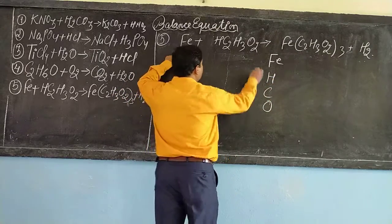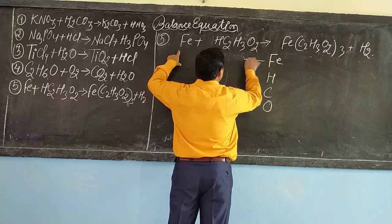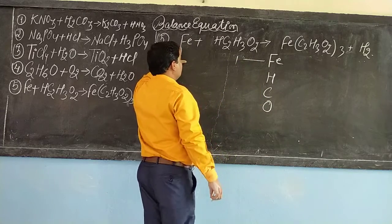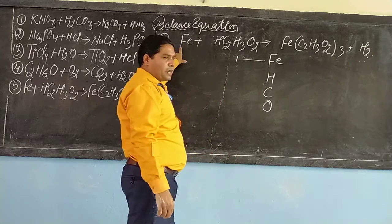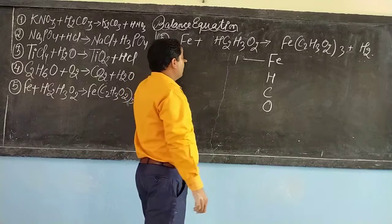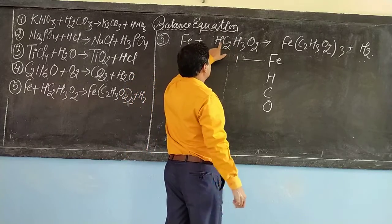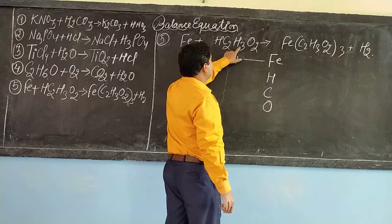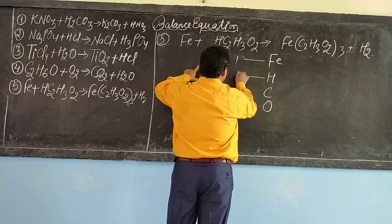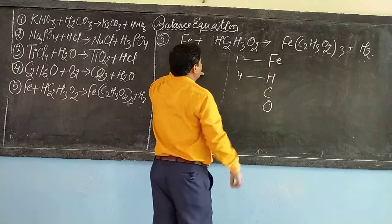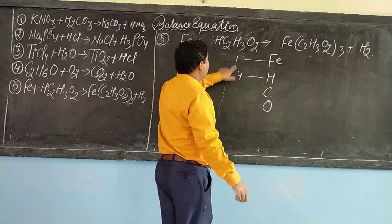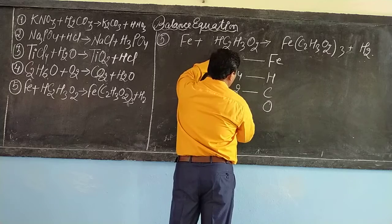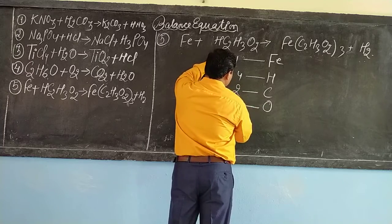So you see here, iron: 1 — no number is written here, so the number of atoms is 1. Hydrogen: 1H is here and another H is here, so it will be 4 total. Carbon: you see 2, and oxygen: 2.